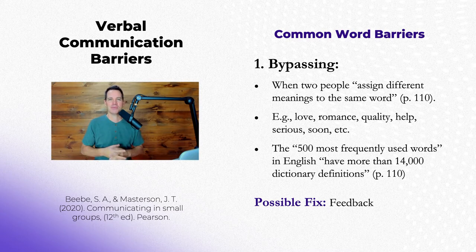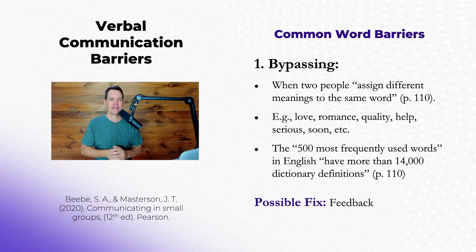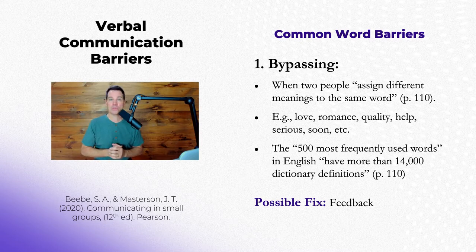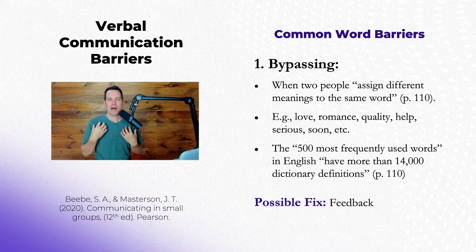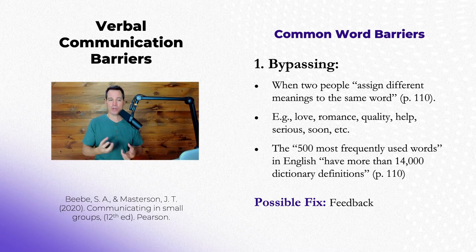This happens in interpersonal relationships, in friendships, in marriages, and it certainly happens in the workplace. In fact, there was a study done that showed that the 500 most frequently used words in the English language have more than 14,000 dictionary definitions. So I don't have a monopoly on what the correct understanding of a word is — we have to work that out. A possible fix to this is feedback.